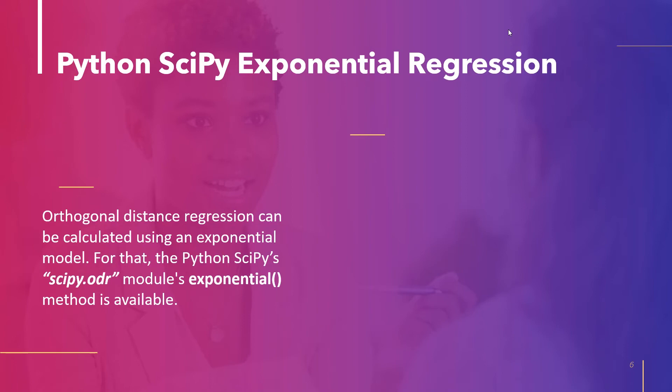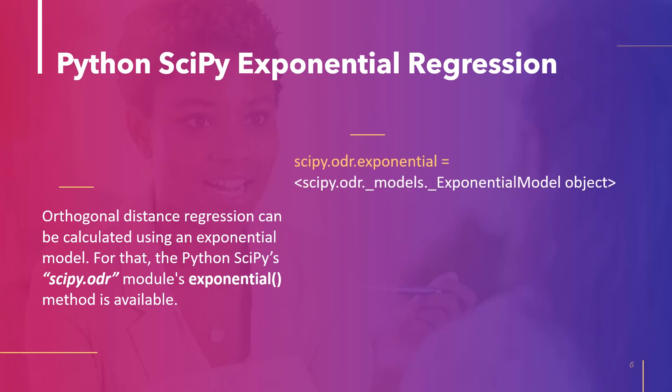The last topic of this tutorial is Python SciPy exponential regression. An exponential model can be used to calculate orthogonal distance regression. Python SciPy has a method exponential within the module scipy.odr for that. The above method doesn't accept any parameters — we can use it directly with the data.